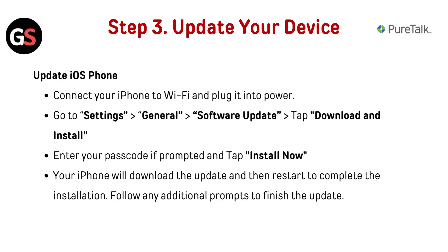Step 3: Update your device. To update an iPhone, connect it to Wi-Fi and plug it into power. Go to Settings, then General, then Software Update, and tap Download and Install. Enter your passcode if prompted and tap Install Now. Your iPhone will download the update and restart to complete the installation. Follow any additional prompts to finish the update.